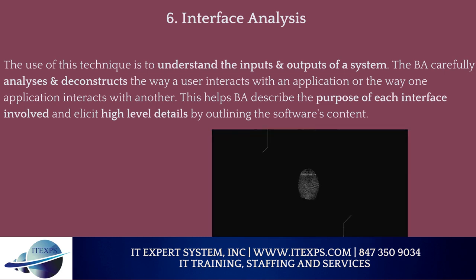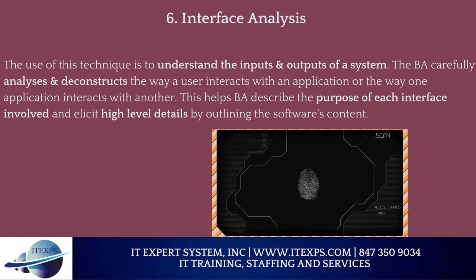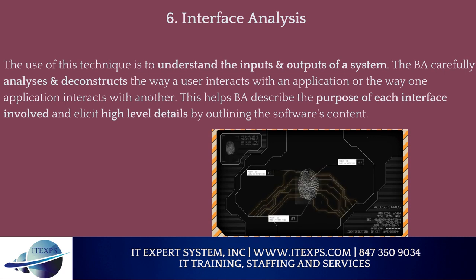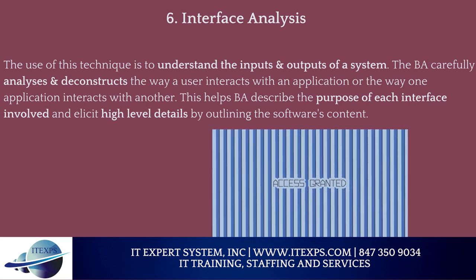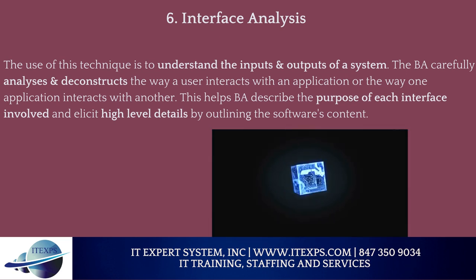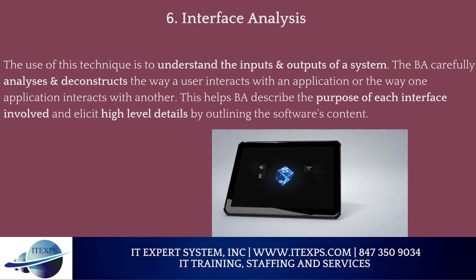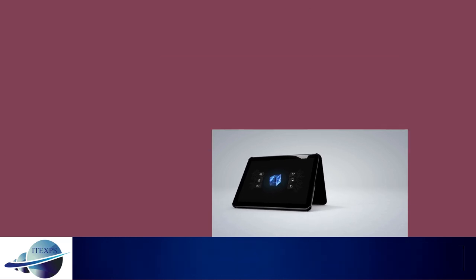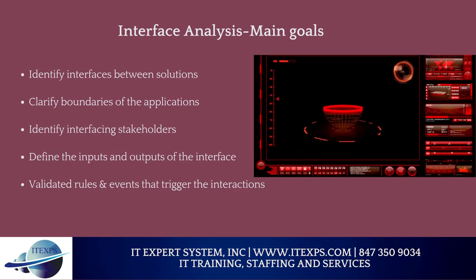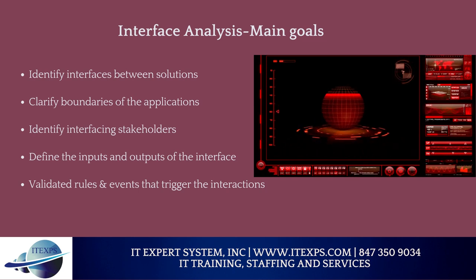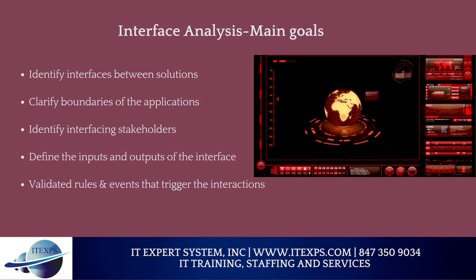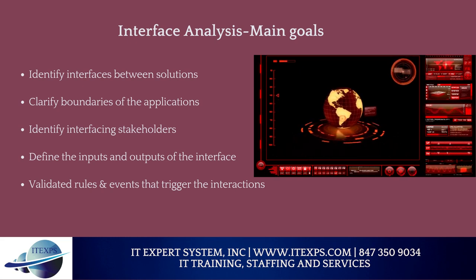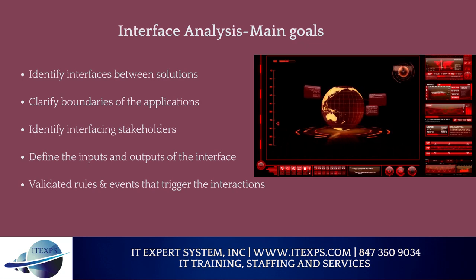Number 6: Interface Analysis. The use of this technique is to understand the inputs and outputs of a system. The BA carefully analyzes and deconstructs the way a user interacts with an application, or the way one application interacts with another. This helps the BA describe the purpose of each interface and elicit high-level details by outlining the software's content. The main goals are to: identify interfaces between solutions, clarify boundaries of applications, identify interfacing stakeholders, define inputs and outputs of the interface, and validate the rules and events that trigger interactions.